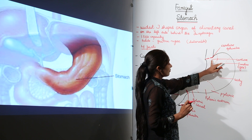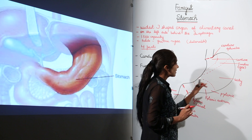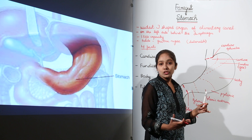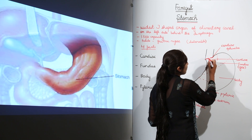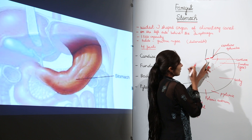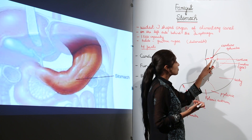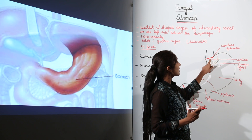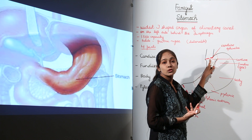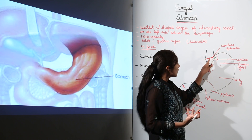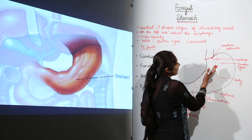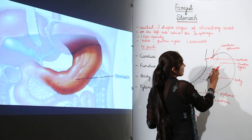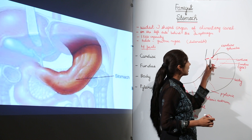The stomach has four parts: cardiac, fundus, body, and pyloric. We call the first part the cardiac part because it is near the heart, and there is a cardiac sphincter here. The other name for the cardiac sphincter is the gastroesophageal sphincter. It prevents the backflow of digested food in the stomach so that food does not go back to the esophagus.